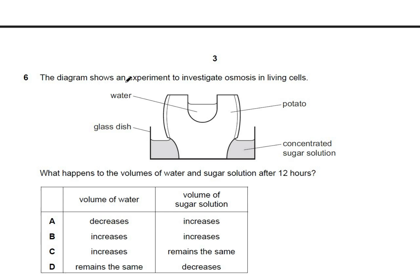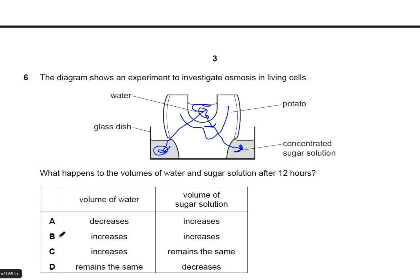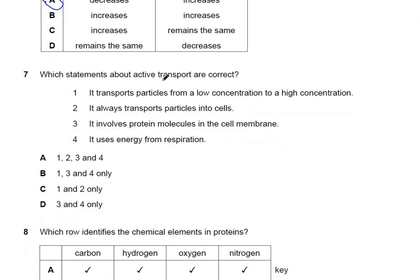Question 6 shows an experiment investigating osmosis in living cells — a potato piece in a glass dish containing sugar solution with water. Water molecules move along the water potential gradient from the water into the potato, and then from the potato into the concentrated sugar solution, resulting in an overall increase in the volume of the concentrated sugar solution after 12 hours. The answer is A.